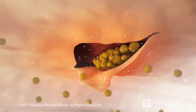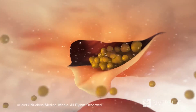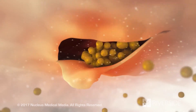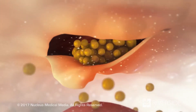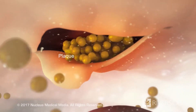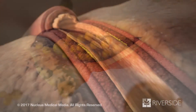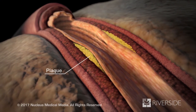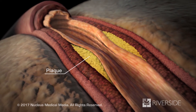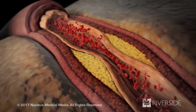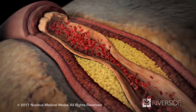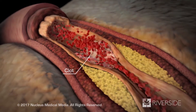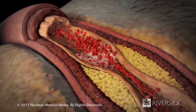Small tears in your artery wall may attract certain substances in your blood, such as cholesterol, fat, and calcium, to form a buildup called a plaque. Blood flow through your artery decreases as the plaque enlarges. Blood cells can stick to the plaque and form solid clumps called clots, further reducing or completely blocking your blood flow.